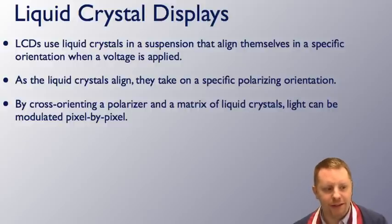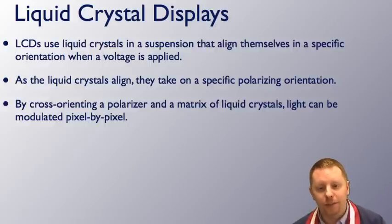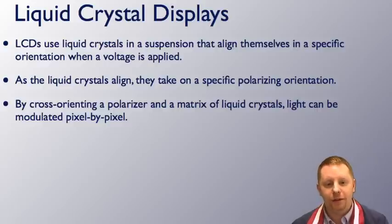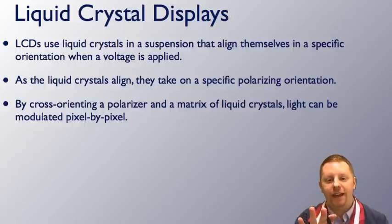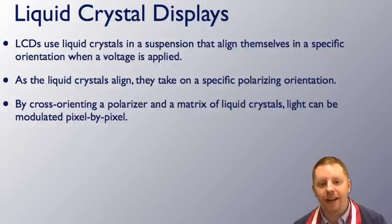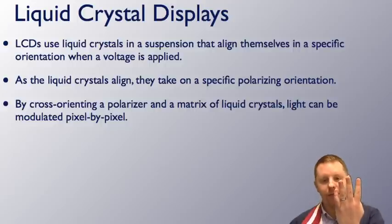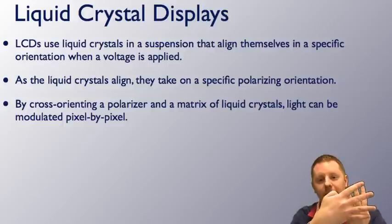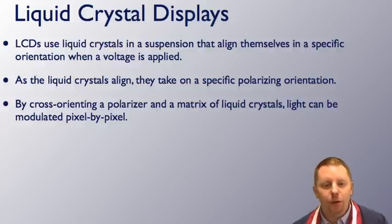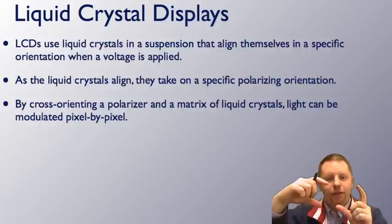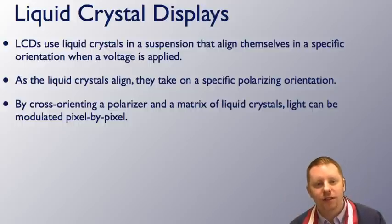Another place you see this is in liquid crystal displays, like LCD monitors. LCDs use liquid crystals in a suspension and they align themselves in a specific orientation when the voltage is applied. That allows you to allow the light through at certain times when the voltage is applied and not when it isn't, or vice versa. Now as the liquid crystals align, they take on that specific polarizing orientation and they have a light source, then in front of that light source they have a polarizing filter, and then they have an array of pixels where they have polarizing filters in a cross orientation they can turn on and off. If they turn them on so they're in a cross orientation, one polarizing filter this way, another one this way, no light gets through. If they want to allow light through, they allow the other filter to go in that direction and the light can make it through both sets of slits. And you can test this out. Take your pair of sunglasses that are polarized or a polarizing filter and hold it in front of the LCD screen and then try twisting it back and forth and you can see what happens as you change the orientation of the polarizing filter.